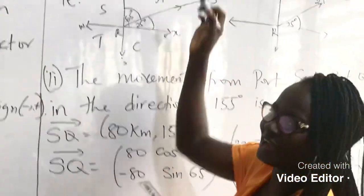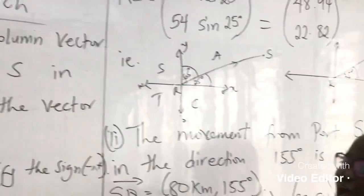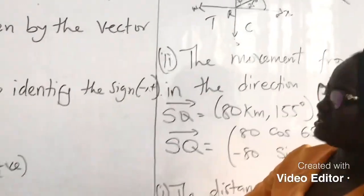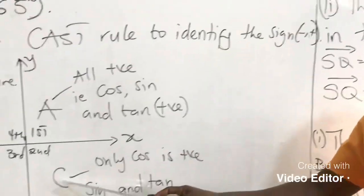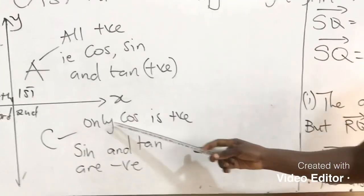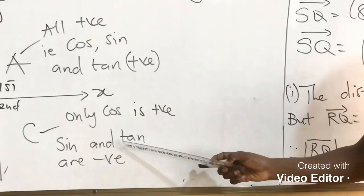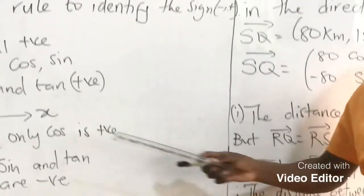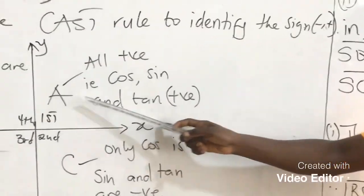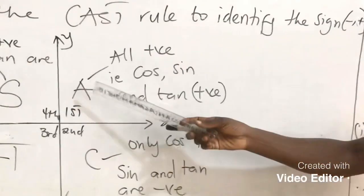What if we get negative or positive somewhere? We use our CAST rule. C, A, S, T. As C says, only cos in this quadrant is positive. Therefore, sin and tan are negative in this quadrant. Then our A states that all are positive. So either cos, sin or tan, when it falls in the first quadrant, it's going to give you a positive sign.